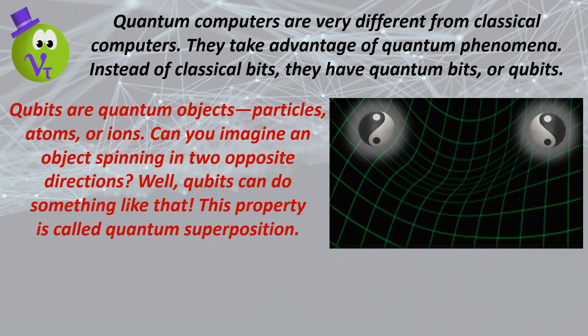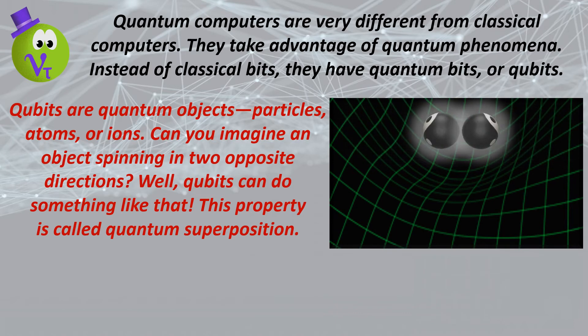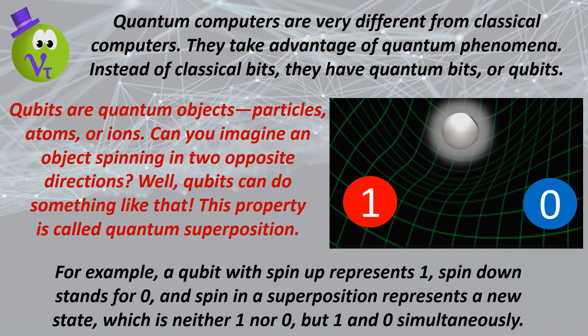Qubits are quantum objects—particles, atoms, or ions. Can you imagine an object spinning in two opposite directions? Well, qubits can do something like that. This property is called quantum superposition.